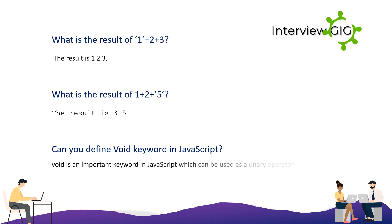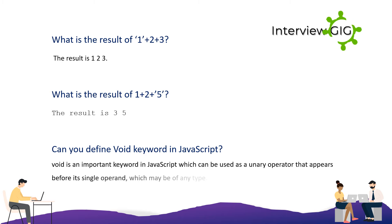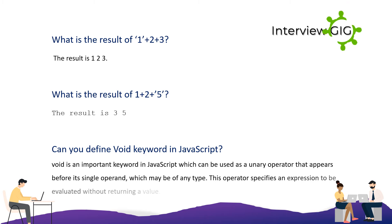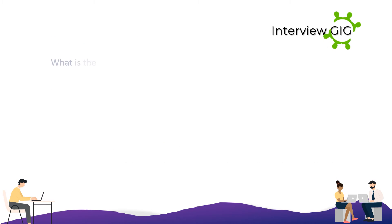The void operator specifies an expression to be evaluated without returning a value. What is the way to create a cookie in JavaScript? The most effective way to create a cookie is to assign a string value to the document.cookie object.